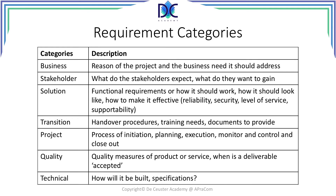When we look at requirements, there may be different types of requirement categories. First, requirements related to the business: what are the reasons that we are doing this project? The second category relates to stakeholders: what is the expectation of the stakeholders, what are they going to gain or what are they going to lose?